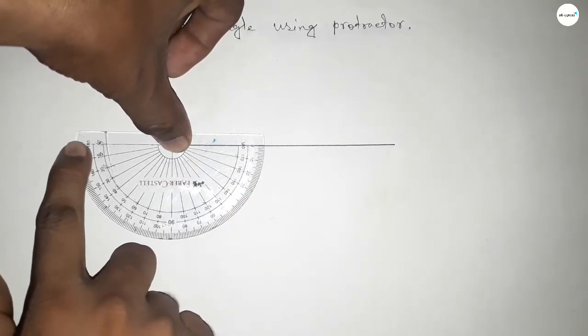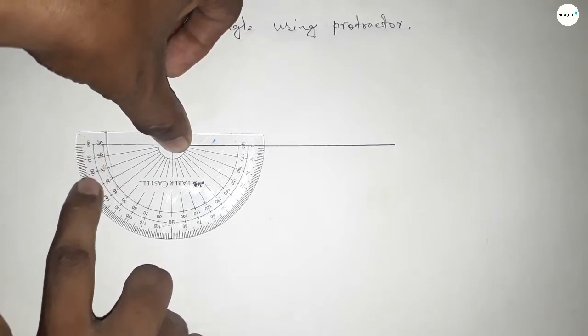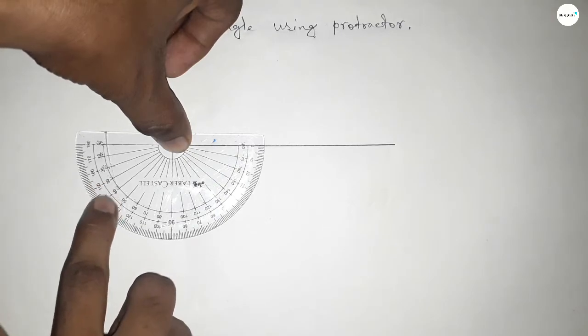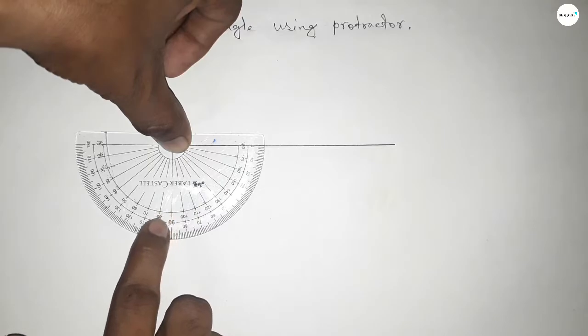This is 180 degrees. Now we have to count 100 more, so this is 40, 50, 60, 70, 80, 90, and 100.